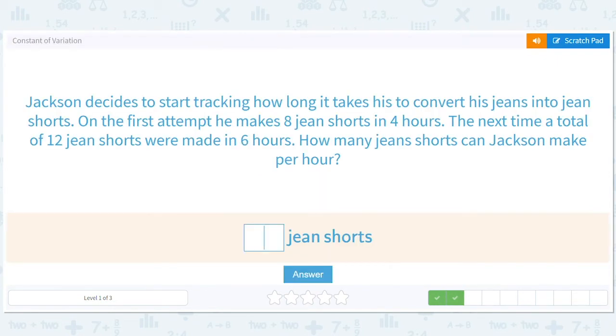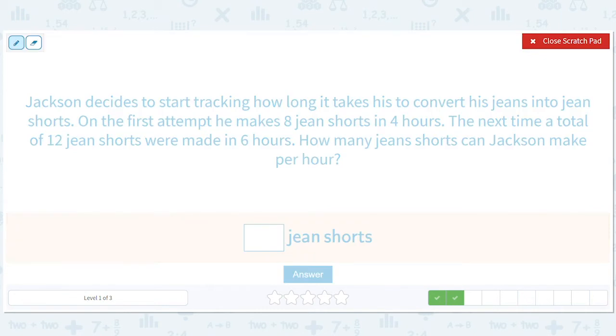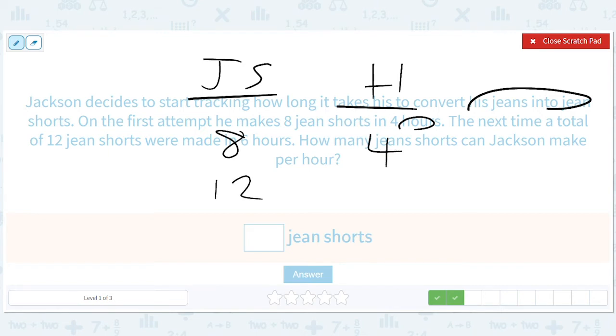We've got shorts. So jean shorts and hours. Convert his jeans into jean shorts. On the first attempt, he makes eight jean shorts in four hours. The next time there are a total of 12 jean shorts in six hours. How many jean shorts can Jackson make per hour? So now we have a one here. And now we really do need to think a little bit harder about the pattern. So how do we get from four to eight? We times it by two. How do we get from six to 12? We multiply it by two.